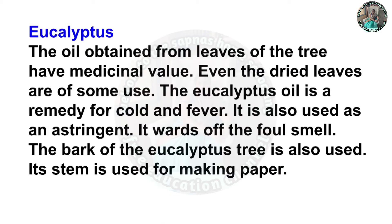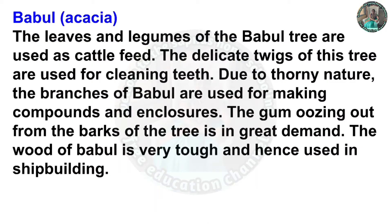Eucalyptus: The oil obtained from the leaves of the eucalyptus tree has medicinal value. Even the dried leaves are of some use. The eucalyptus oil is a remedy for cold and fever. It is also used as an astringent to ward off fuel smell. The bark of the eucalyptus tree is also used, and its stem is used for making paper. Babul / Acacia: The leaves and legumes of the babul tree are used as cattle feed. The delicate twigs of this tree are used for cleaning teeth. Due to its thorny nature, the branches of babul are used for making compounds and enclosures. The gum oozing from the bark is in great demand, and the wood of babul is very tough and hence used in shipbuilding.